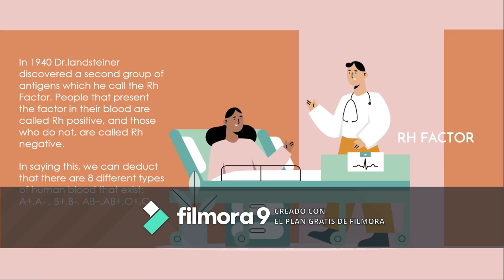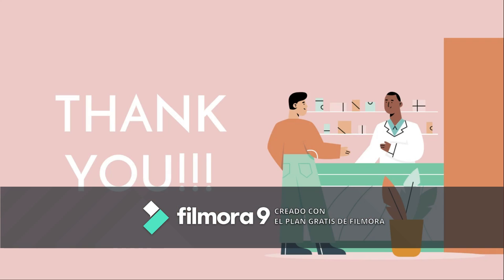The RH factor was discovered in 1940. People who present the RH factor in their blood are called RH positive, and those who do not are called RH negative. Combining these, we can deduce that there are 8 different types of human blood: A positive, A negative, B positive, B negative, AB positive, AB negative, O positive, and O negative.